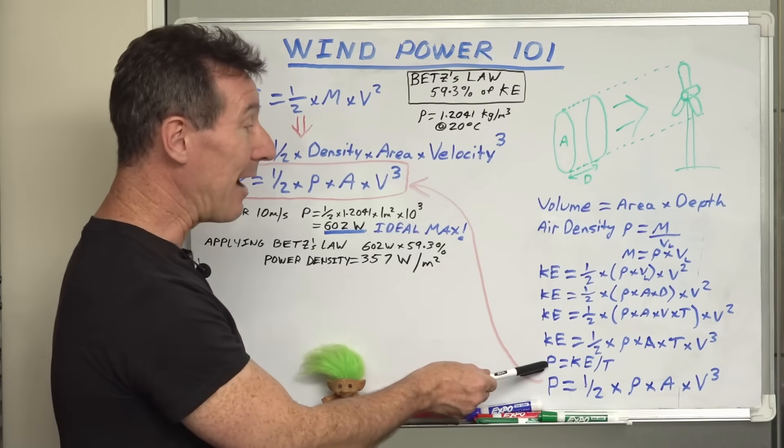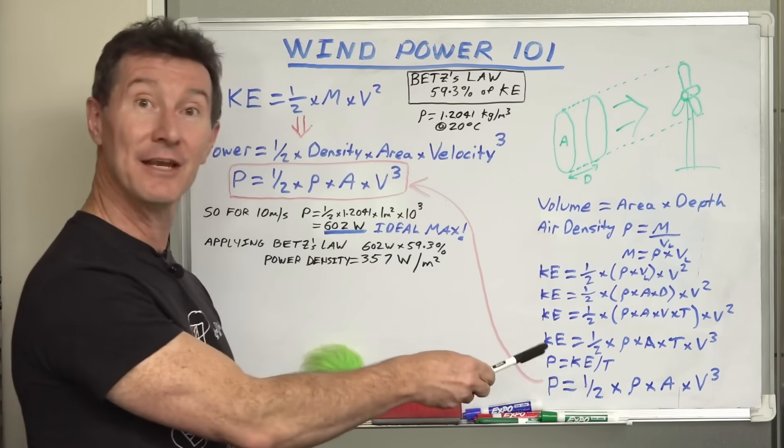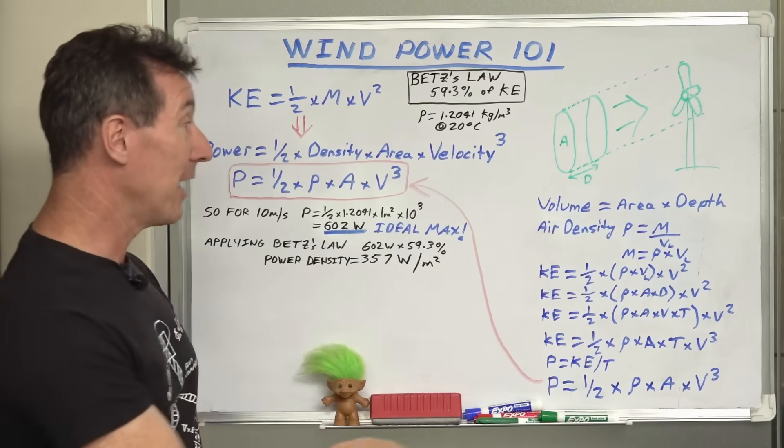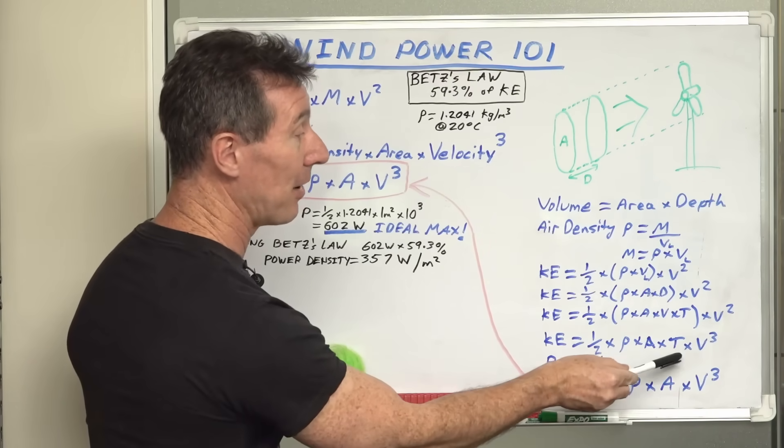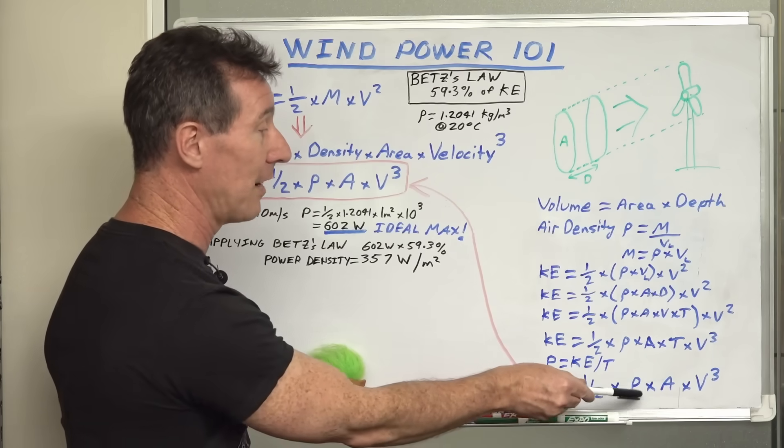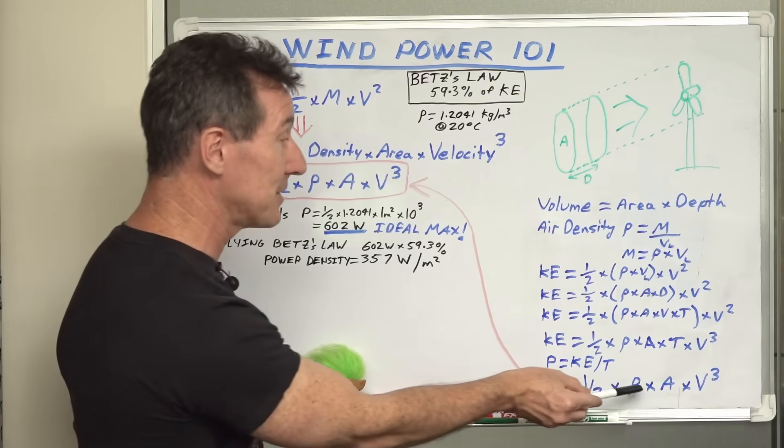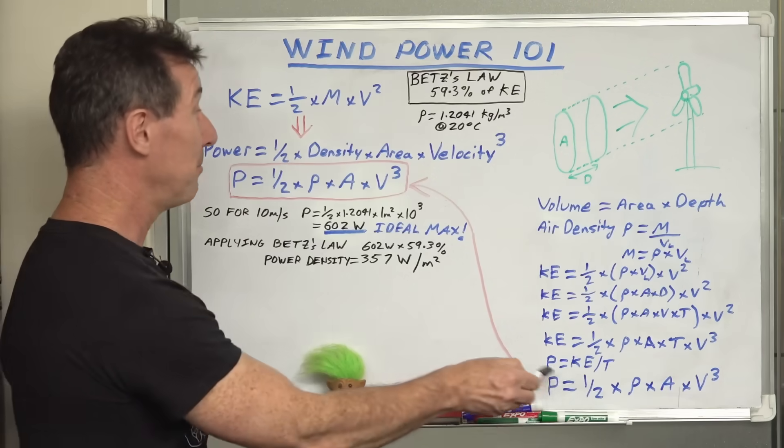And here's the last step: power, because we want power, not kinetic energy. Power is kinetic energy divided by time. So if we divide this part here by time, the T's cancel out. And bingo, you're left with power equals half times rho, which is the air density, times the area, times velocity cubed.